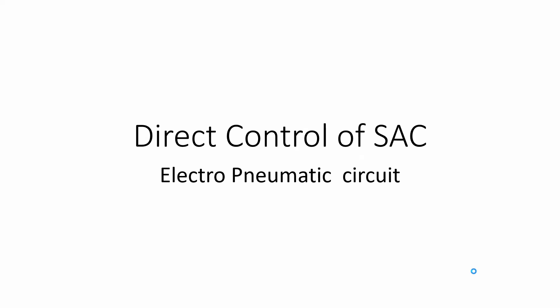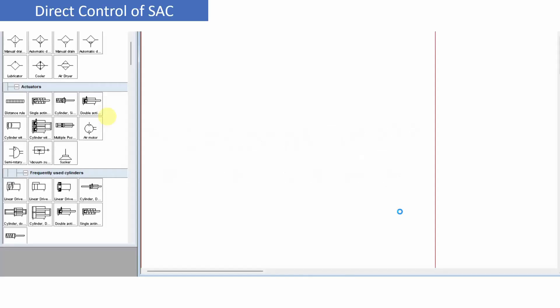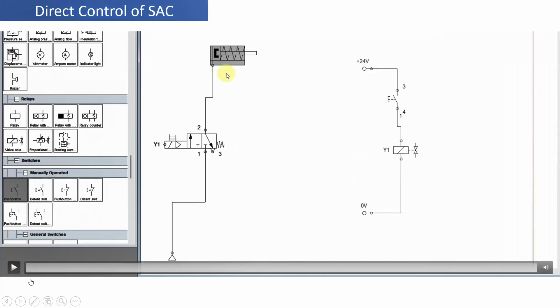In this video we will see how to obtain the direct control of a single acting cylinder. The electro-pneumatic circuit is drawn using the Festo FluidSIM software, so let us draw the circuit first.